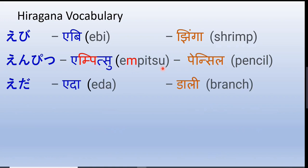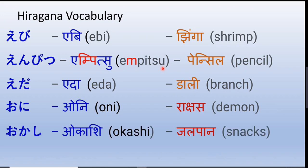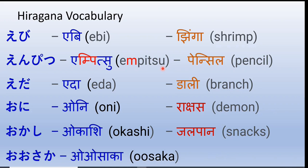Eda — branch of a tree. Oni — a demon. Okashi — snacks. Osaka — this is the name of a very famous Japanese city. Notice that there are two O sounds: Osaka, so there will be a stress on the O sound at the beginning.